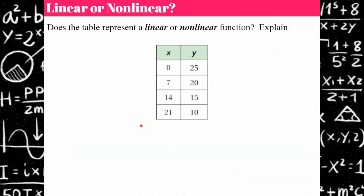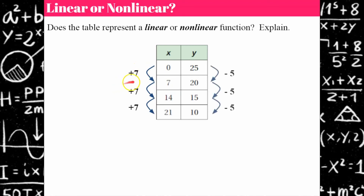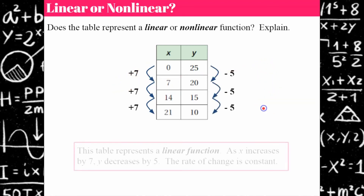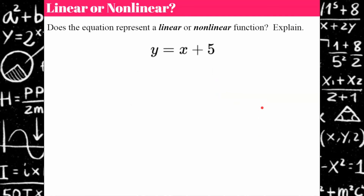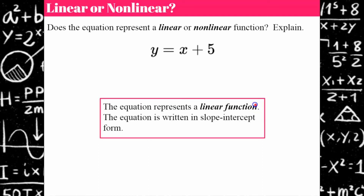Your turn — pause and come back to check your work. Welcome back. Let's check for a constant rate of change: x is increasing by 7 as y is decreasing by 5. Therefore, this table represents a linear function. Next equation: this is a linear function because it's written in slope-intercept form. I have a slope of 1 and a y-intercept of 5.